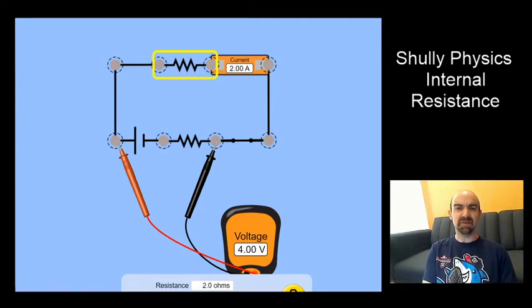especially when we get down to those really low resistance values, which means a very high current, the potential difference across the battery really decreases quite a bit. So this is the phenomenon we're looking at here.